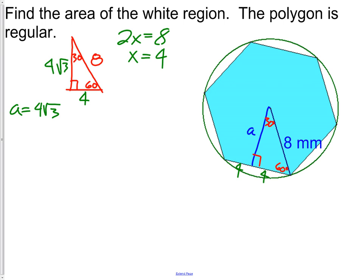Since the half-side is 4, the full side length is 8. In a regular hexagon, the distance from the center to a vertex equals the side length. So all six sides are 8, giving a perimeter of 8 × 6 = 48.